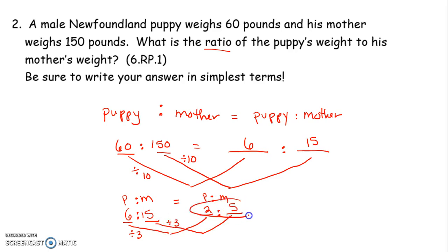So in simplest terms, the ratio of 2 to 5 will give you the puppy's weight to his mother's weight. So as you set up your ratio on your CR, you have to make sure you put it in simplest terms for your teacher. I hope that helps.